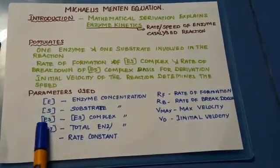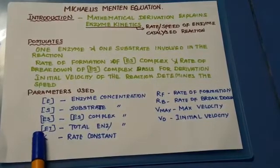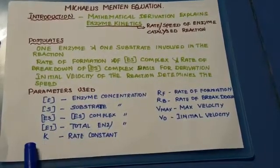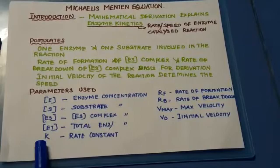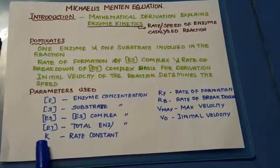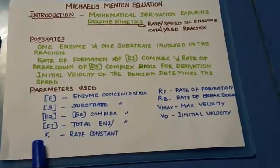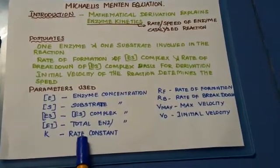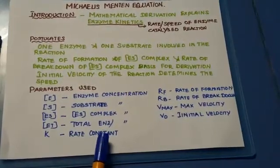The parameters include substrate concentration [S], enzyme-substrate concentration [ES], and total enzyme concentration [Et]. We will also be coming across the terms K1, K2, and K3, which are the rate constants of the reaction.